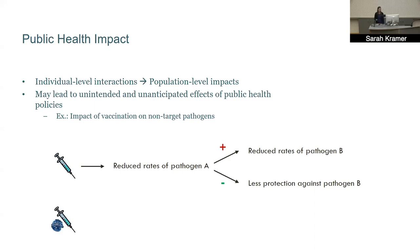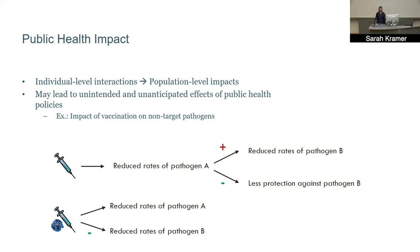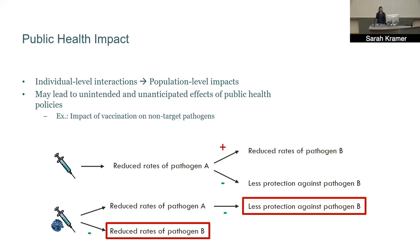The situation becomes even more complex with a live vaccine. Consider a negative interaction: vaccinating against pathogen A with a live vaccine reduces rates of pathogen A. Since the live vaccine includes live pathogen A, it might have a similar protective impact on pathogen B as natural infection — potentially reducing pathogen B rates at the individual level. But at the population level, reduced pathogen A means less natural protection against B, potentially increasing burden. These are conflicting effects, and it's difficult to determine which will dominate without more complex tools.